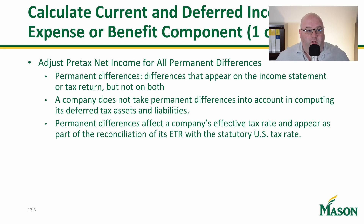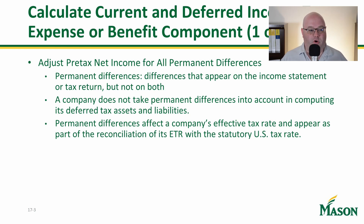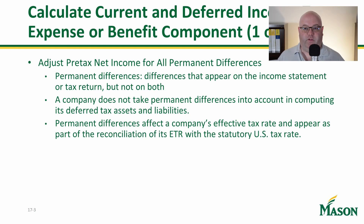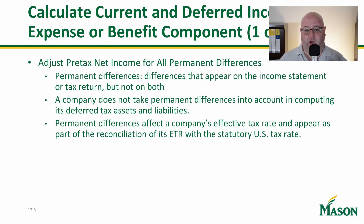When calculating the current and deferred income tax expense or benefit, the first thing we're going to do is adjust the pre-tax net income for all permanent differences. In the current portion, we do care about permanent differences, but when we're talking about future differences — deferred benefits, DTAs, DTLs — we're going to focus solely upon the temporary stuff. Because if it's permanent, it's here, it's gone, it's done. We don't have to mess with that anymore.